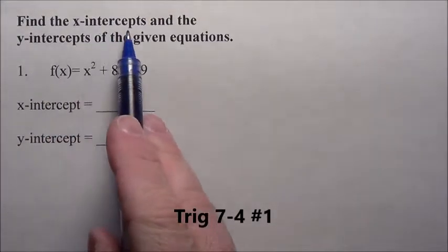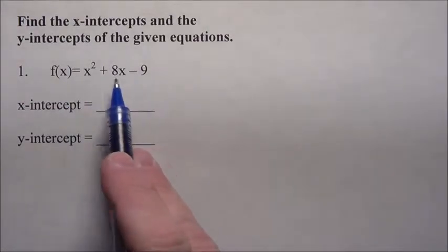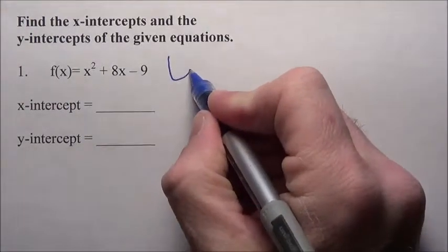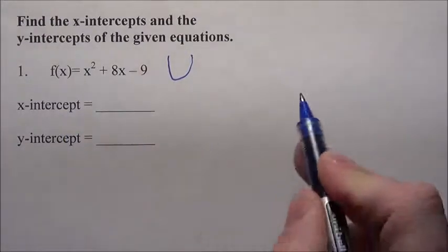Problem number one says find the x-intercepts and the y-intercepts of the given equation. Here's the given equation. I know that it's a parabola facing upwards, but I want to know where it's going to hit the x-intercept and the y-intercept.